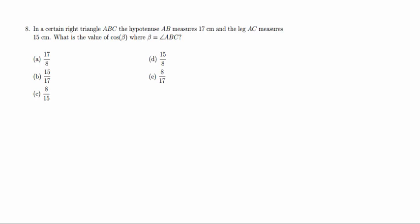in a certain triangle ABC, the hypotenuse AB measures 17 centimeters, and the leg AC measures 15 centimeters. What is the value of cosine of beta, where beta is equal to the angle ABC?